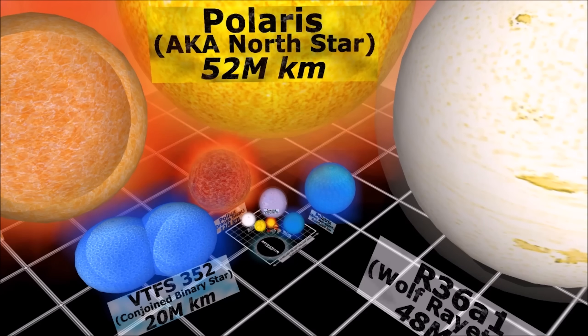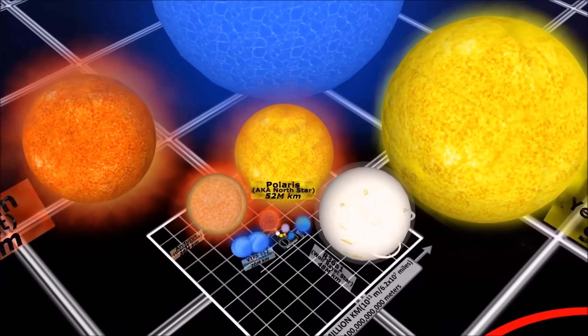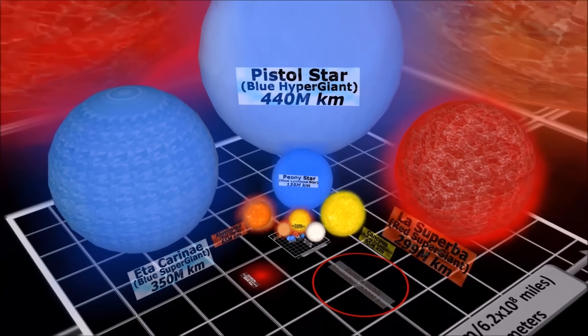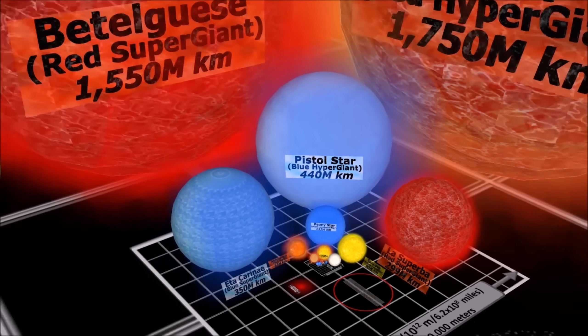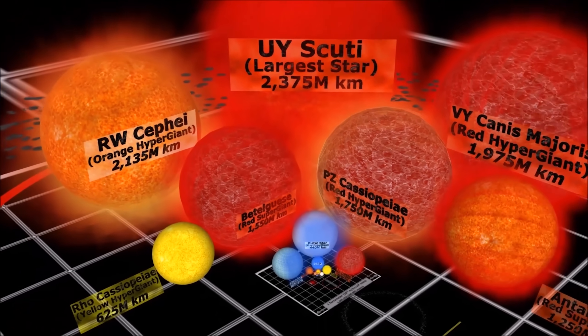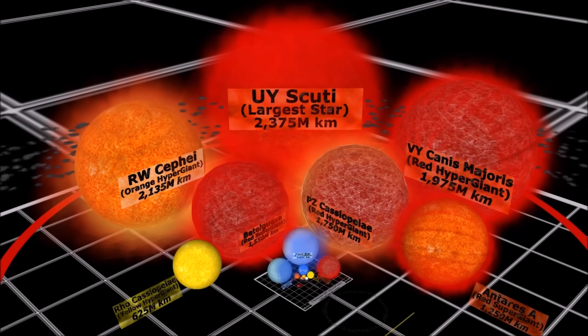Polaris, over ten thousand times bigger than our sun. Pistol star, three thousand times larger than Polaris. If it was our sun, it would have reached far out as Mars. And then there's this monster, UY Scuti, the largest star ever discovered, a billion times bigger than our sun.